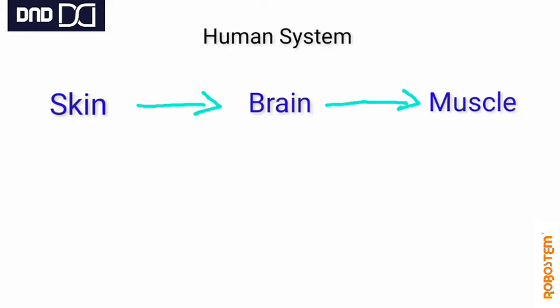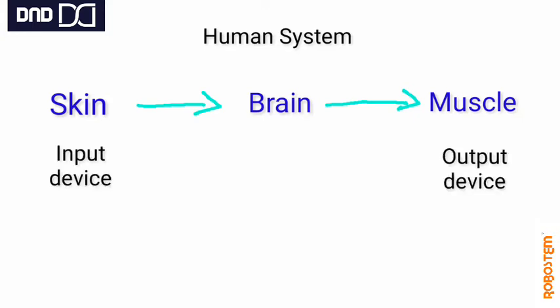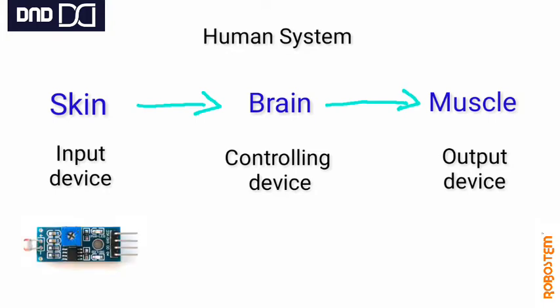If you replicate the same system into electronics, there will be three things: input devices, output devices, and a controlling device. For example, input devices in electronics are most of the time sensors. Take an example of an LDR sensor — these sensors give input to the electronic controlling device.